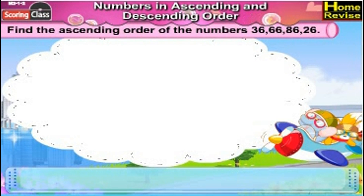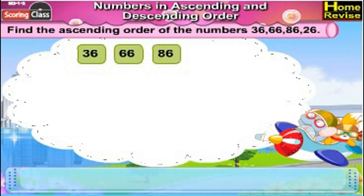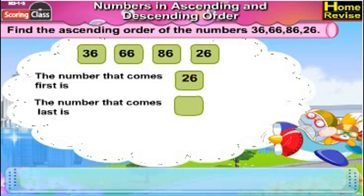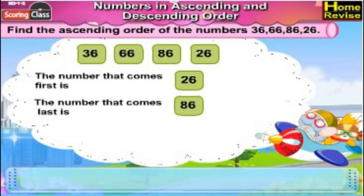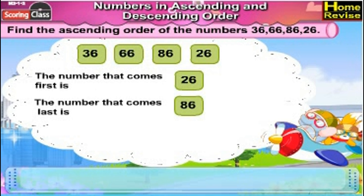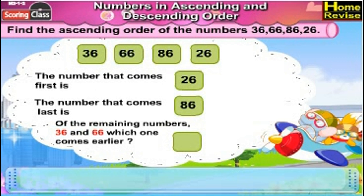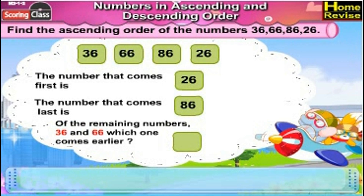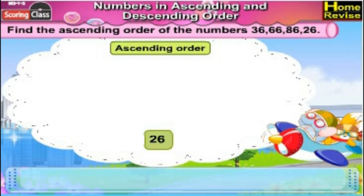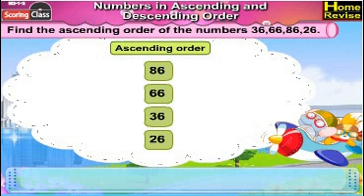Find the ascending order of the numbers 36, 66, 86, 26. The number that comes first is 26. The number that comes last is 86. Now 26 is the number that comes first and 86 comes last. Of the remaining numbers 36 and 66, which one comes earlier? That's correct, 36. So the ascending order would be 26, 36, 66, 86.